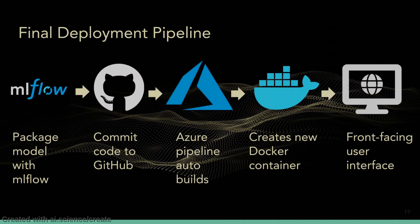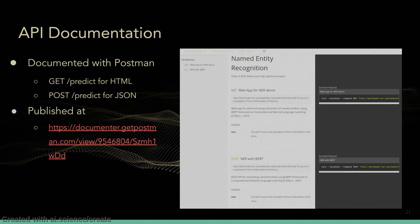Here is a diagram of our final deployment pipeline. We would package up our models with MLflow, and then when we committed to GitHub, we would trigger an automatic build on Azure, creating a new Docker container, all resulting in a front-facing user interface via Flask. We also documented our API using Postman: a GET request returns the NER tags in HTML format, which makes it easy for our web app to use, and a POST request returns it in JSON format.